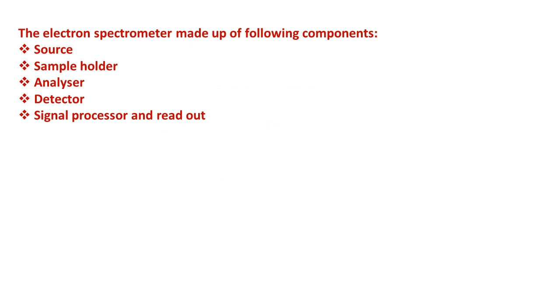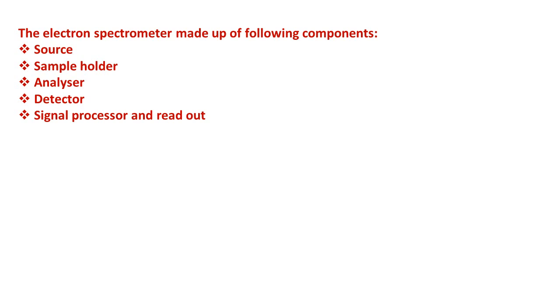The electron spectrometer is made up of following components, or these are the major components of XPS. First is source, then sample holder, analyzer, detector, and signal processor and readout.